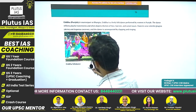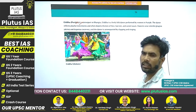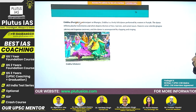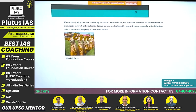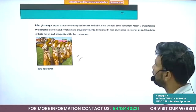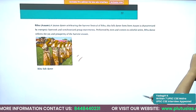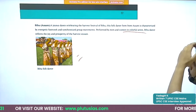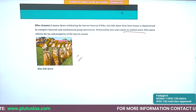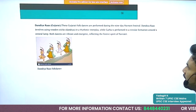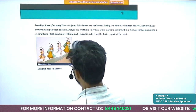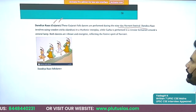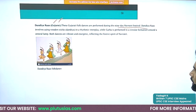Gidda folk dance is also from Punjab, performed especially by unmarried girls. Bihu dance is famous in Assam — performed by both men and women in colorful attire, it reflects joy and prosperity of the harvest season. Dandiya Raas is associated with Gujarat — it is essentially performed during the nine-day Navratri festival.